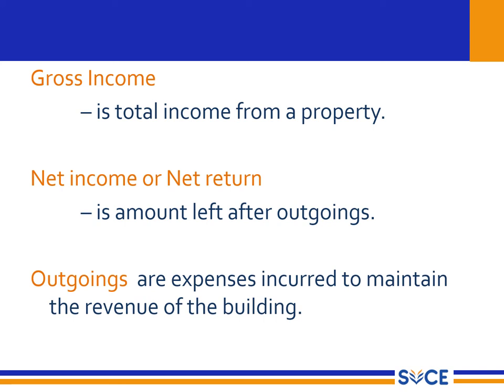Next is net income. Net income is how much is left after outgoings. If you're going to collect 60,000 rent for the property, you cannot pocket the entire 60,000 without maintaining the building. You have to set aside a certain amount of the gross income towards maintenance of the building. The amount left after maintenance and other outgoings is called net income, or the net return. Outgoings are the expenditure incurred to maintain the revenue from the building.